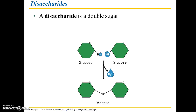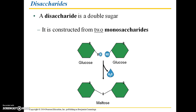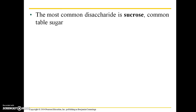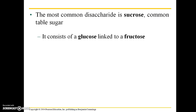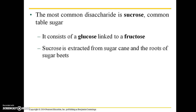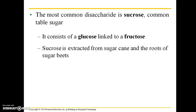Disaccharides are double sugars, constructed from two monosaccharides. Here you have a glucose molecule and another glucose molecule coming together in a dehydration synthesis to form maltose, which is the double sugar. The most common disaccharide is sucrose, which is common table sugar. It consists of a glucose linked to a fructose. Sucrose is commonly extracted from sugarcane and the roots of sugar beets.